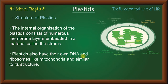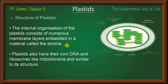Plastids also have their own DNA and ribosomes, just like mitochondria. So both mitochondria and plastids have their own DNA and ribosomes. Which plant organelles have their own DNA and ribosomes? Answer: plastids.